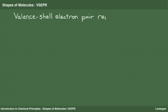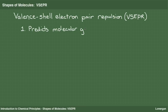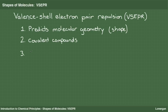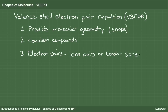Valence-shell electron pair repulsion, or VSEPR theory, predicts the shape of molecules, or molecular geometry. It applies to covalent compounds because these can form molecules, unlike ionic solids. It is based on the principle that the electron pairs around an atom repel each other. These electron pairs are in lone pairs and bonds, and these lone pairs and bonds want to spread out from each other as far as possible.